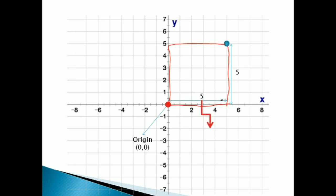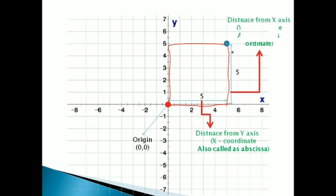यह origin से जो आप left या right को horizontally travel करते हो, इसे हम बोलते हैं distance from Y-axis, और X-coordinate, और abscissa — तीनों नाम याद रखना। और जो आप horizontal travel करने के बाद vertical travel करते हो — upward या downward — उसे हम बोलते हैं distance from X-axis, और Y-coordinate, और ordinate — इसके भी तीन नाम हैं। So this point can be written as (5,5) — पहला number horizontal distance दिखा रहा है, दूसरा number vertical distance, और दोनों के signs direction भी दिखाती हैं।